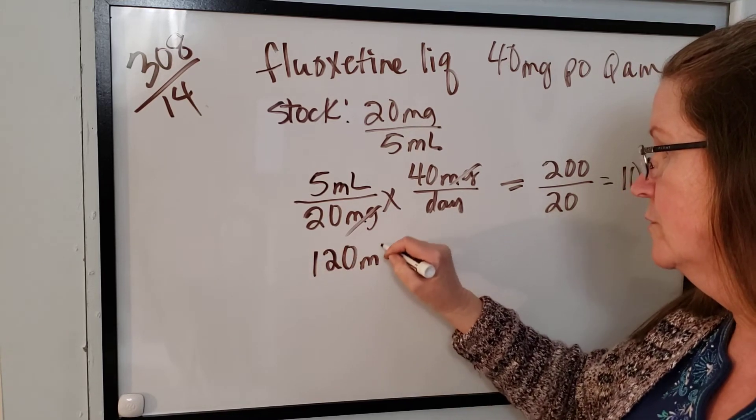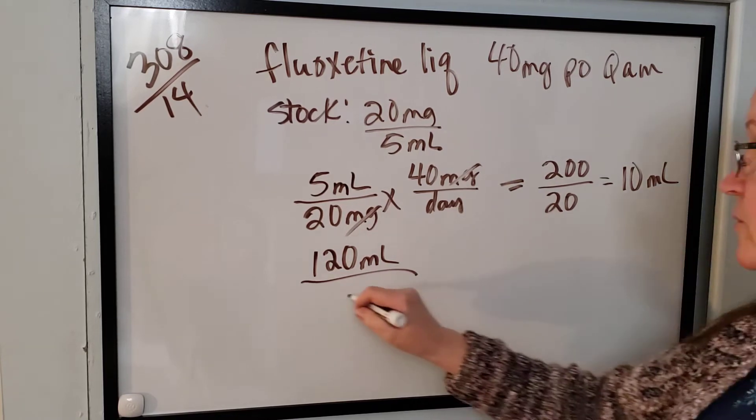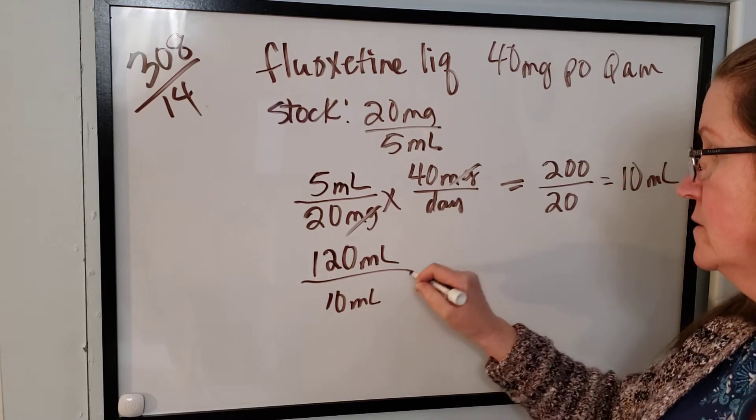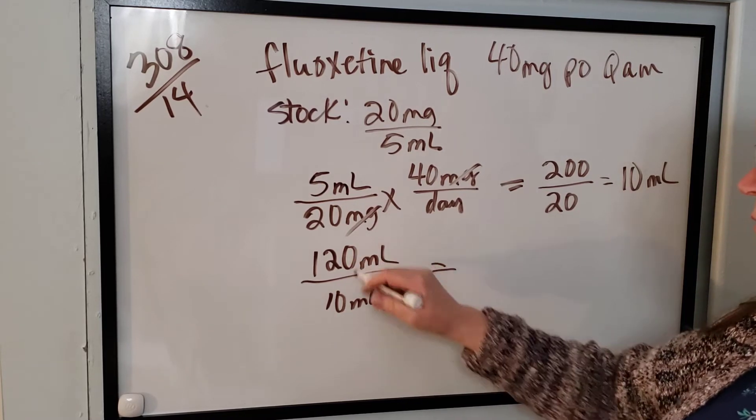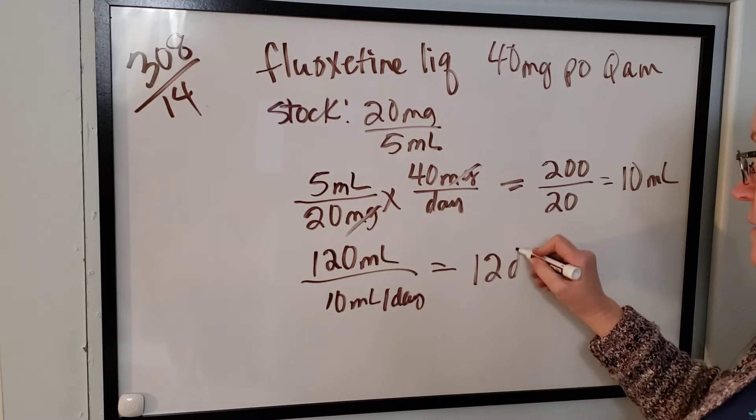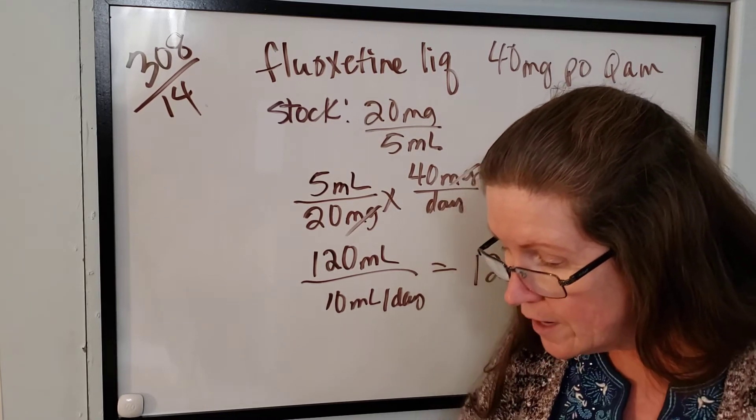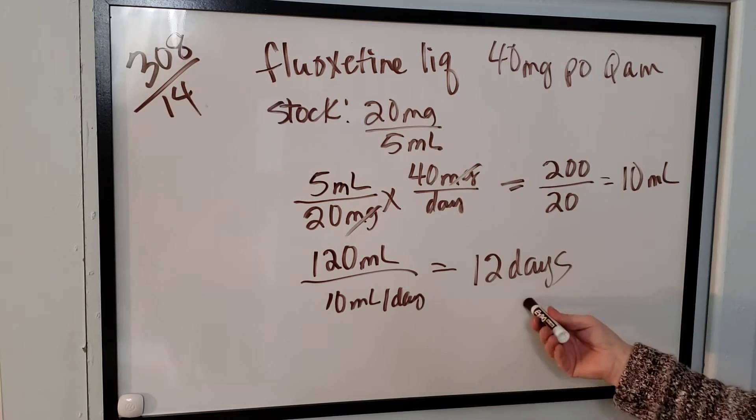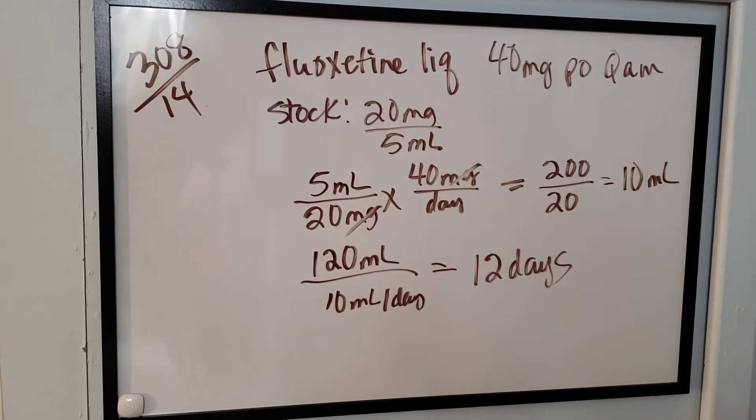Our total amount is 120 milliliters, and the maximum amount they would take in a day is 10 mL per day. 120 divided by 10 is 12 days. Very good, I heard that from somebody. So how many days should this medication last? 12 days. Then write the directions as they should appear on the customer's bottle.